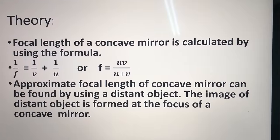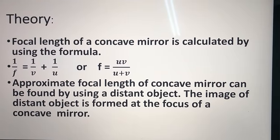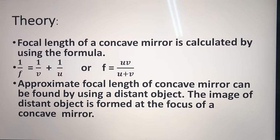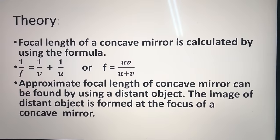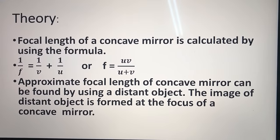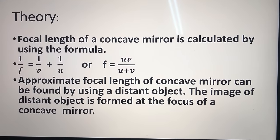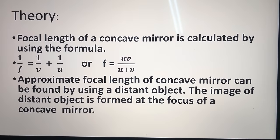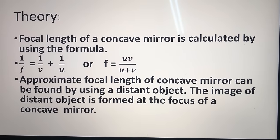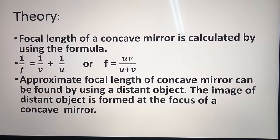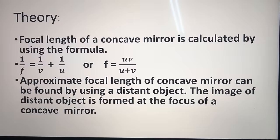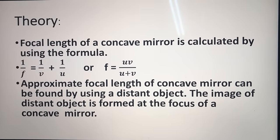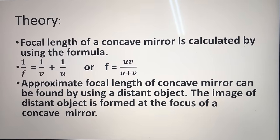Theory: The focal length of a concave mirror is calculated using the formula 1/F = 1/V + 1/U, or F = UV/(U + V). The approximate focal length can be found using a distant object, as the image of a distant object is formed at the focus of a concave mirror.